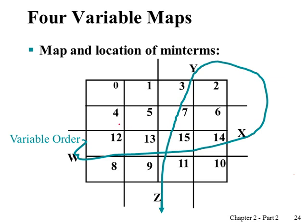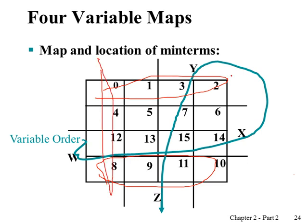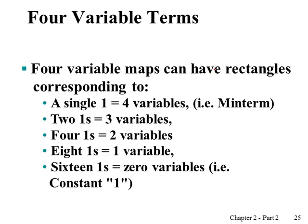Don't forget that the first row and the last row are adjacent, considering it's a wrapped-around map. Similarly, the first column and the last column are adjacent — they are also wrapped around. So both horizontally and vertically, those cells are adjacent.